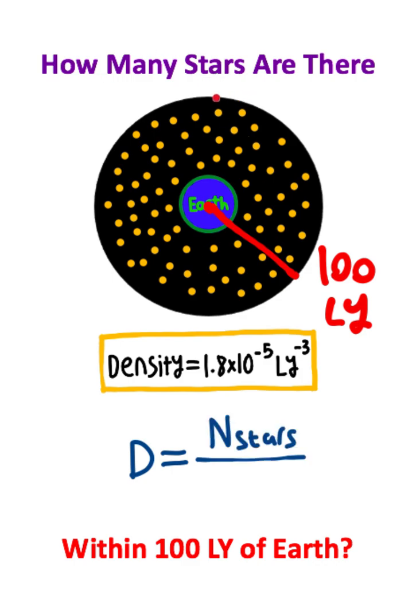And the size we're calculating is this spherical volume of space with a radius of a hundred light years. The volume of a sphere is 4 thirds pi times the radius cubed.